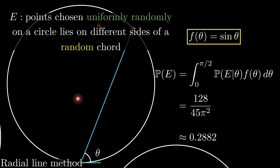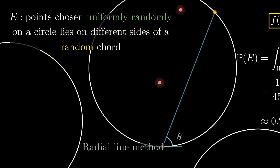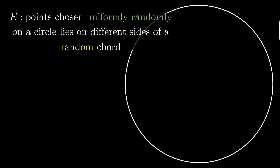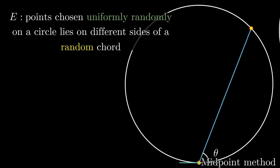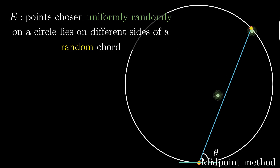With the midpoint method — where we selected a random point in a circle and drew the unique chord with the selected point as its midpoint — the probability comes out to be 1/8 + 2/(3π²).